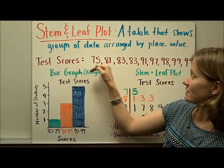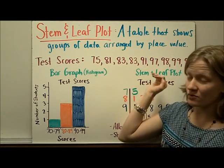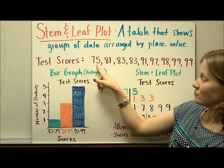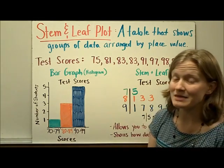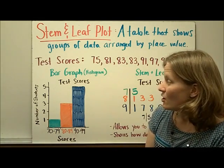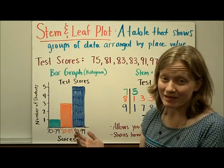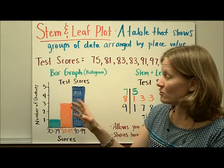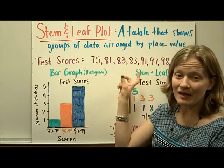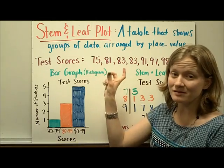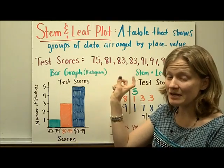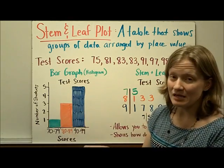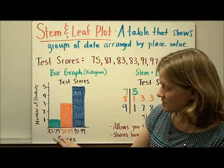Let's say you have a list of test scores from a class. You can see that they range from 75 all the way up to 99. You could make a type of bar graph called a histogram, where you group them by 10s — the 70s, 80s, and 90s — and show the frequency that each of those scores showed up.